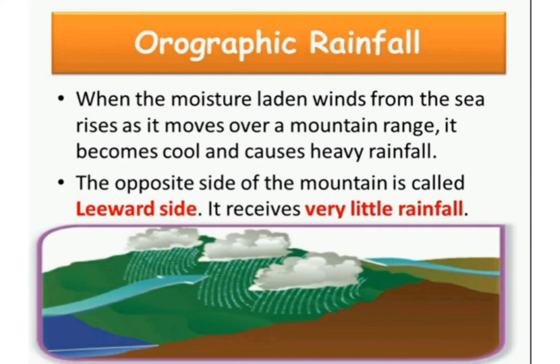The next type of rainfall is orographic rainfall. When the moisture-laden winds from the sea rise as they move over a mountain range, they become cool and cause heavy rainfall. The opposite side of the mountain is called the leeward side, and it receives very little rainfall. This type of rainfall is called orographic rainfall.